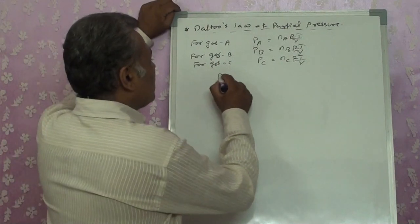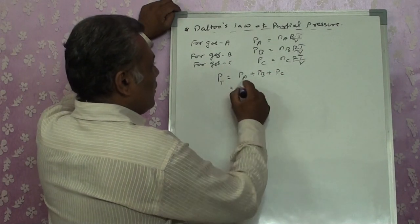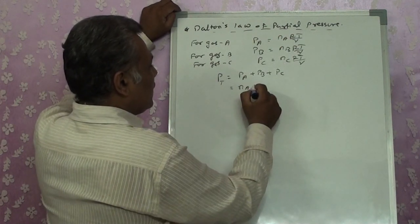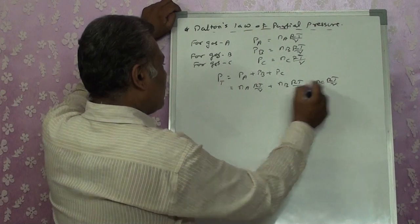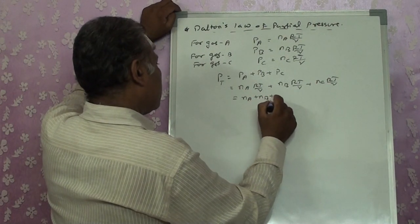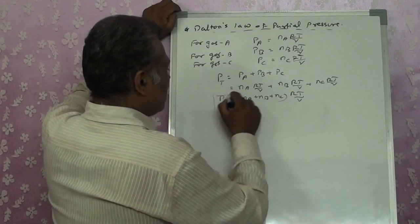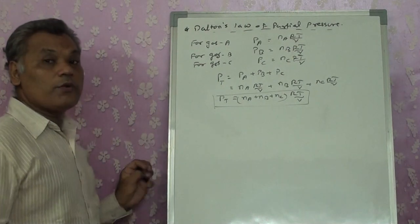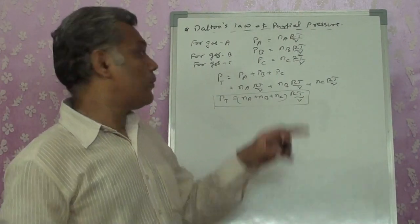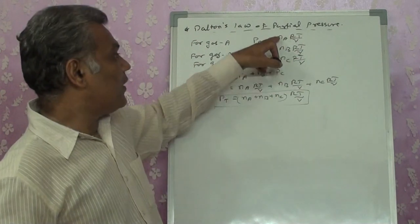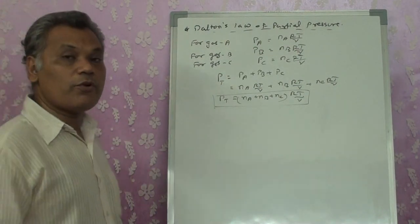Now I want to find P_total. P_total = PA + PB + PC. Substituting: NA·RT/V + NB·RT/V + NC·RT/V = (NA + NB + NC)·RT/V. This is the formula to calculate P_total when number of moles are given but individual partial pressures are not. If volume and temperature are given along with moles, we can directly compute P_total.